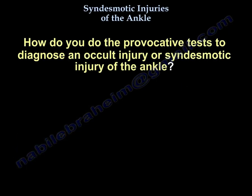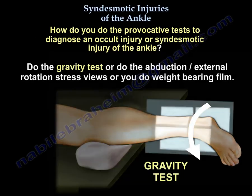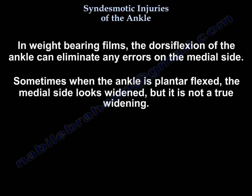How do you do the provocative tests to diagnose an occult injury of the ankle? You do the gravity test, or you do the abduction external rotation stress view, or you do a weight-bearing film. In a weight-bearing film, the dorsiflexion of the ankle can eliminate any errors on the medial side. Sometimes when the ankle is plantar flexed, the medial side looks widened but it is not a true widening.